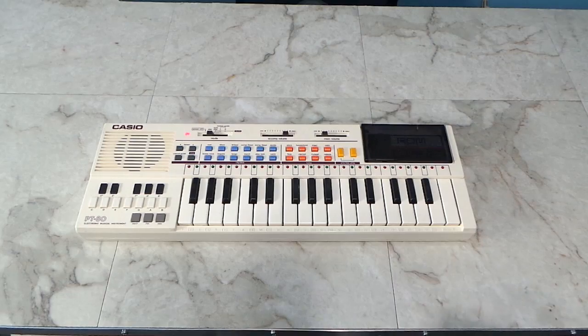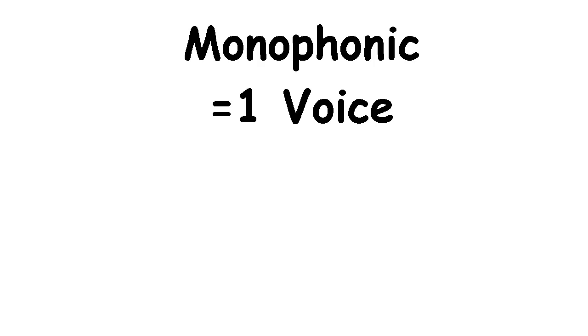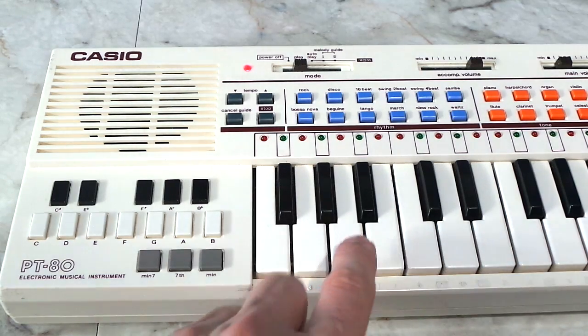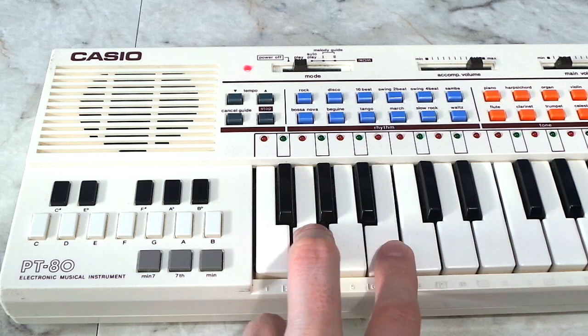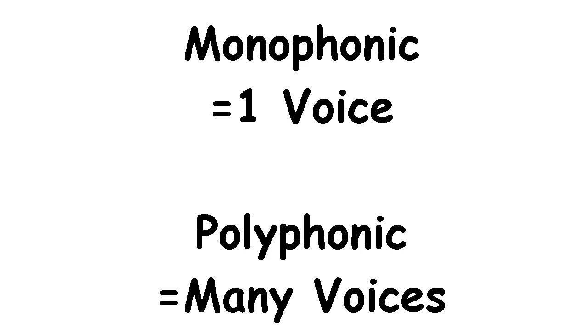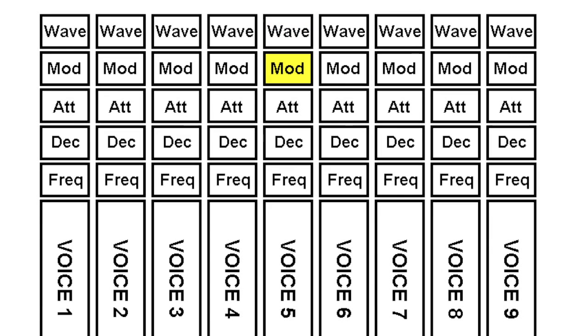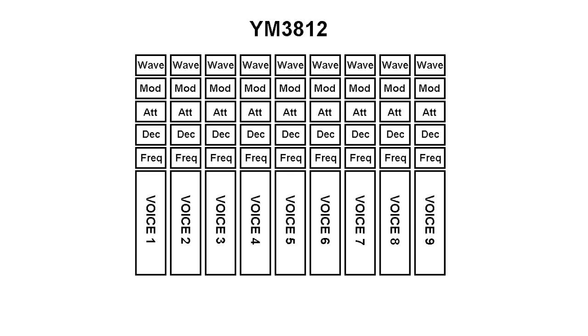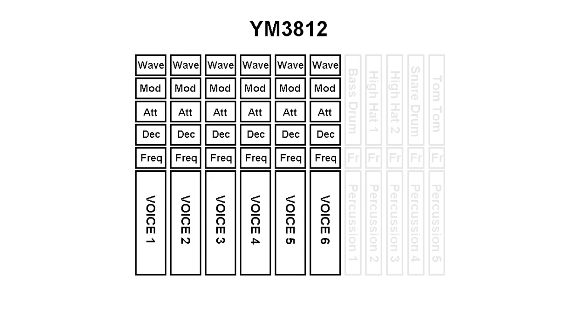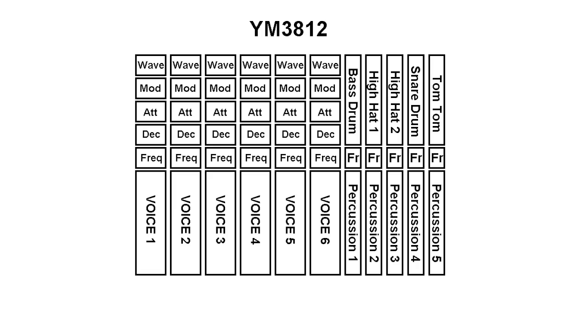This chip had 9 voices and they could be programmed independently to create whatever kind of sound you wanted. This old Casio keyboard from 1984 only has a single voice — we call that monophonic. No matter what I do, I can't play more than one note at a time. So the AdLib card would play 9 voices at the same time, and you could modify things like waveform, modulation, attack, and decay for individual voices. It also had an interesting mode called percussion mode where you could sacrifice 3 of your voices and gain 5 unique drum sounds.